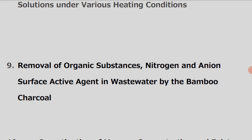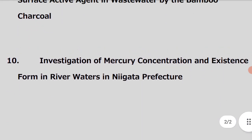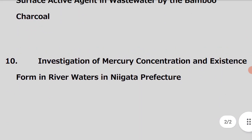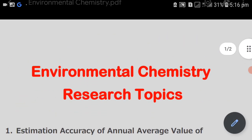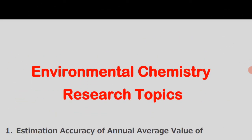The tenth one is: investigation of mercury concentration and existence forms in river waters in Niigata Prefecture. Dear friends, these were the topics we suggested for environmental chemistry — hope this will help you in your academic career.